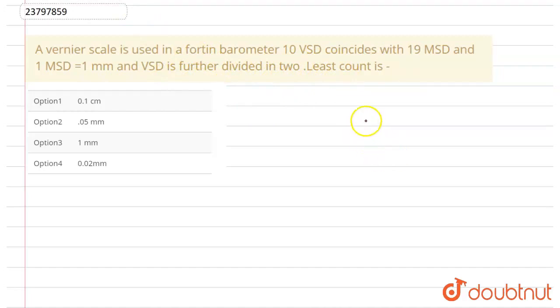What is given? Our 10 VSD, vernier scale division, equals 19 MSD. But we have also said that our VSD is further divided into 2. So, this means that 2 into 10 VSD equals 19 MSD. Therefore, 1 VSD equals 19 by 20 MSD.